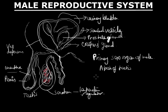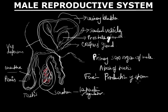The primary function of the testes is to produce sperm, the male sex gamete. The process of production of sperm is known as spermatogenesis. In addition to that, the testes also help to produce and secrete the hormone testosterone.